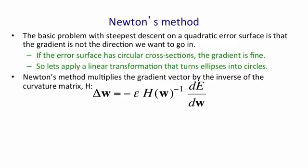If it's a truly quadratic surface, and we choose epsilon correctly, which is quite easy to do, we'll arrive at the minimum of the surface in a single step.